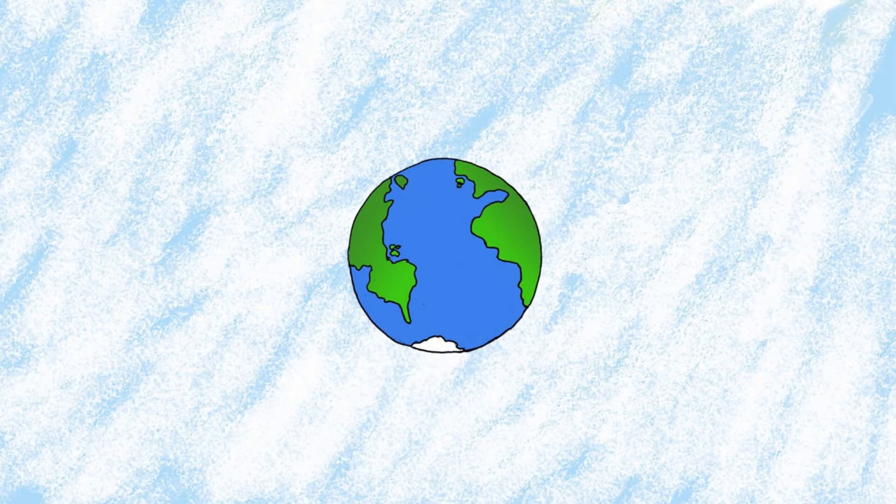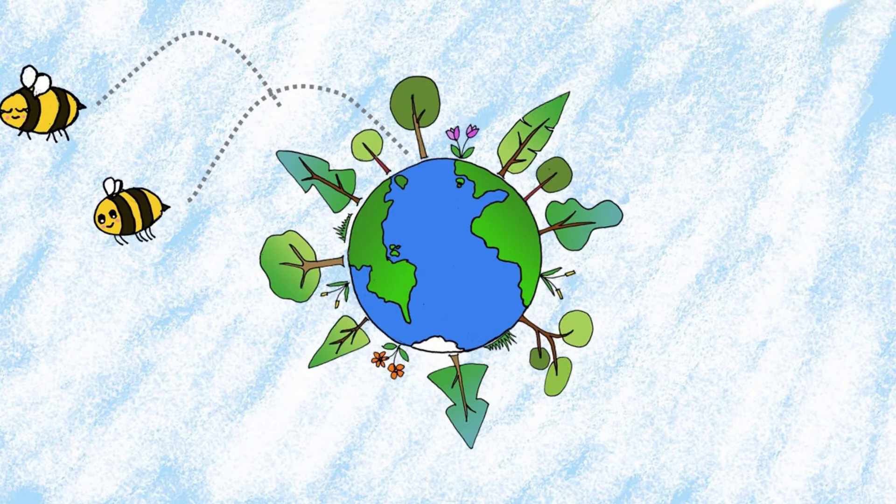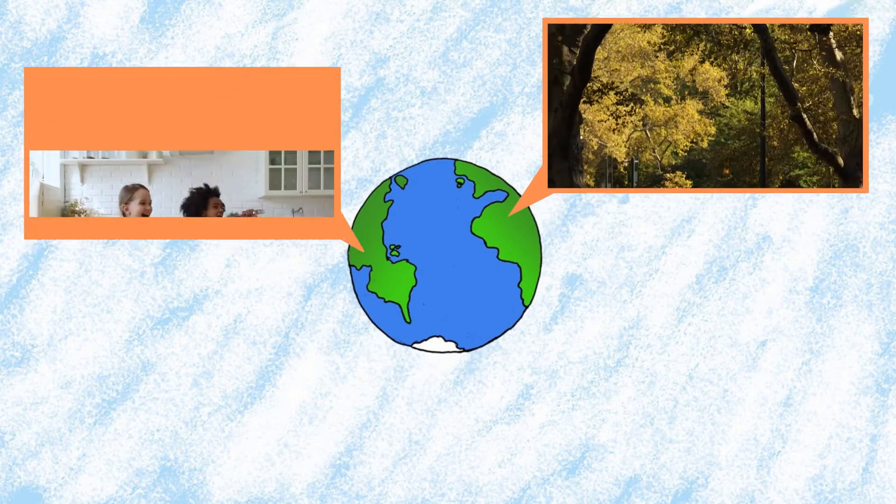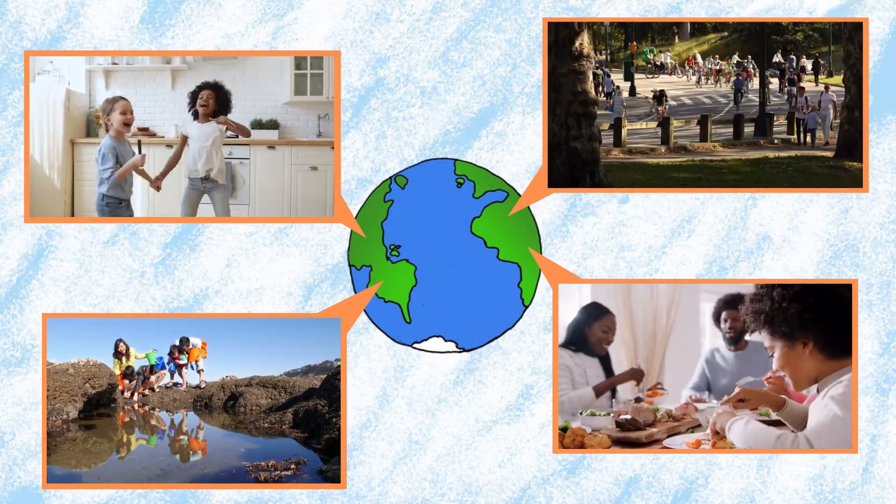There's a special planet called Earth, abundant with trees and bees and dirt, where people live and work and play and share their lands and meals every day.